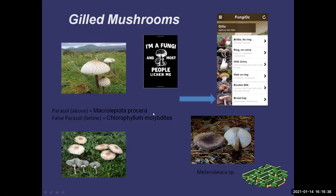Then the broad caps — an example would be the parasol. You have to be careful with this one: there's a poisonous look-alike called a false parasol, and they have different spore print colors, so that's how you tell them apart. There are quite a few in this family, and oyster mushrooms would be another one.